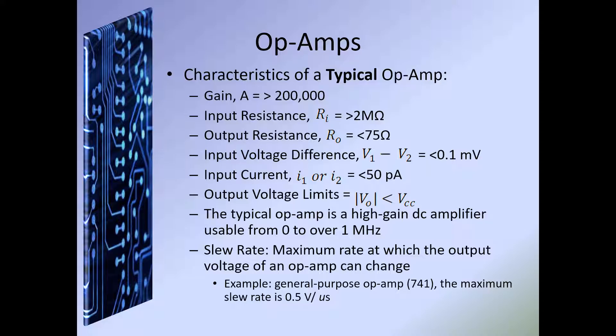For example, if our VCC is set at 15 volts, the op amp itself is going to drop a little bit. I will give you notes in a different lecture on those values of how much we would lose based on the op amp with respect to the output. The typical op amp is a high-gain DC amplifier, usable from 0 to over 1 megahertz. The frequency on the input is super important, so we need to keep that in mind when setting up our labs.